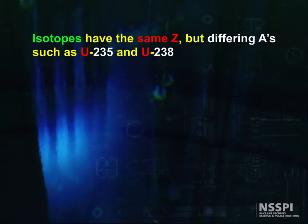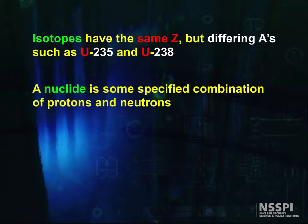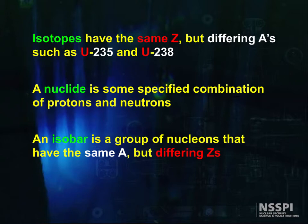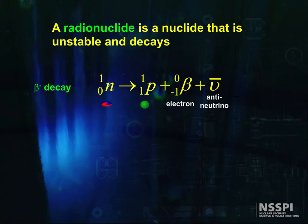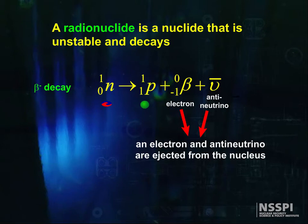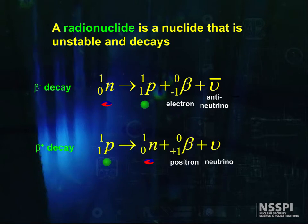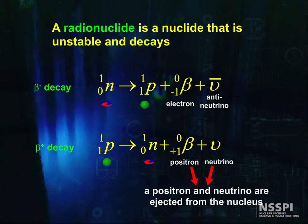As we've seen, isotopes have the same Z but differing A's. U235 and U238 are isotopes. A nuclide is some specified combination of protons and neutrons. An isobar is a group of nucleons that have the same mass number but differing atomic numbers. A radionuclide is a nuclide that is unstable and decays. Beta decay is when a neutron is changed into a proton and an electron and an anti-neutrino is ejected from the nucleus. Beta decay also has an antimatter decay where a proton is changed into a neutron and an anti-electron, also known as a positron, is ejected from the nucleus along with a neutrino.